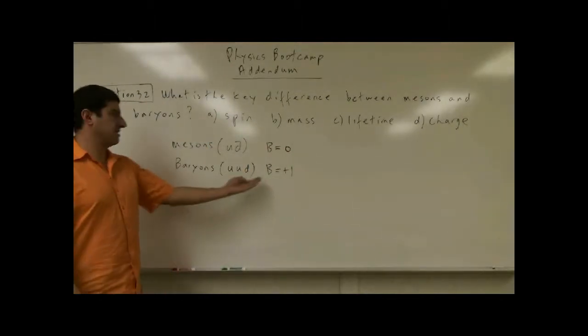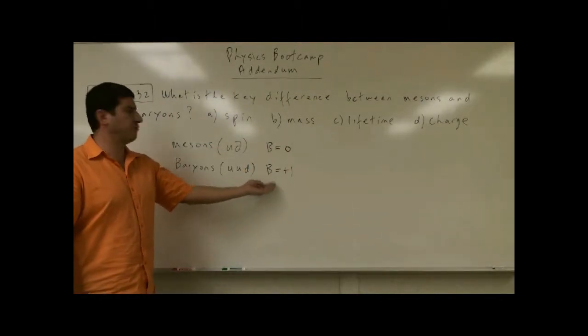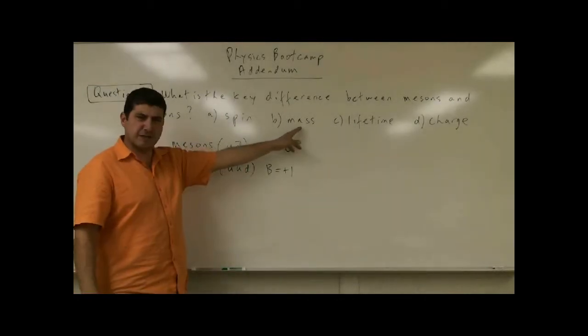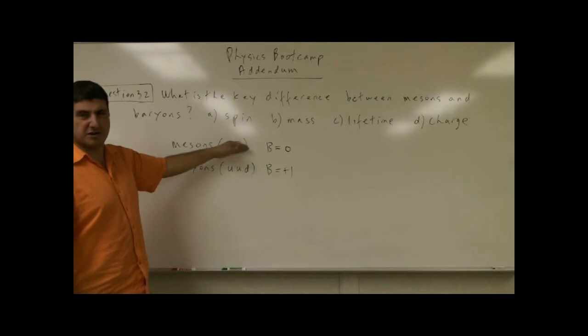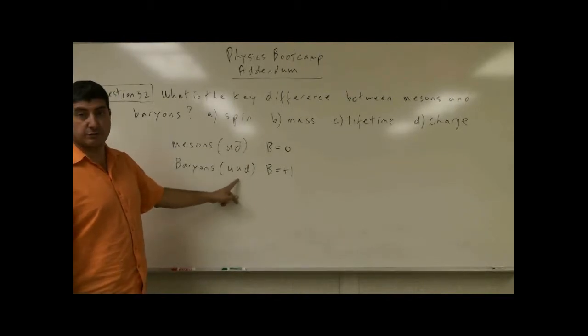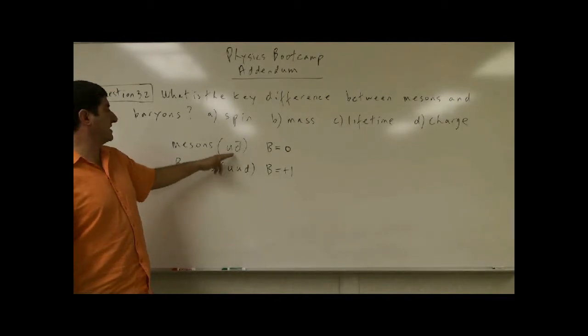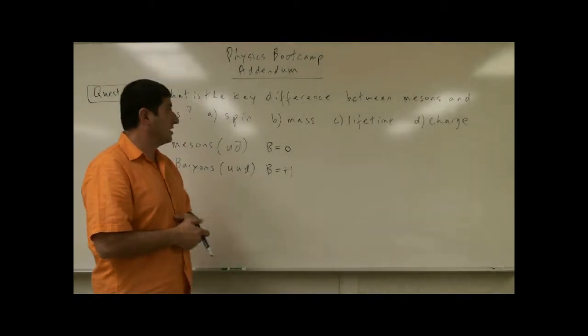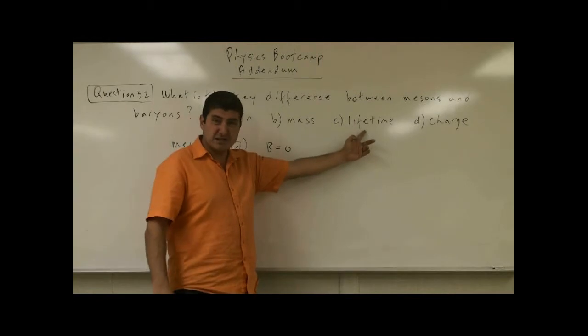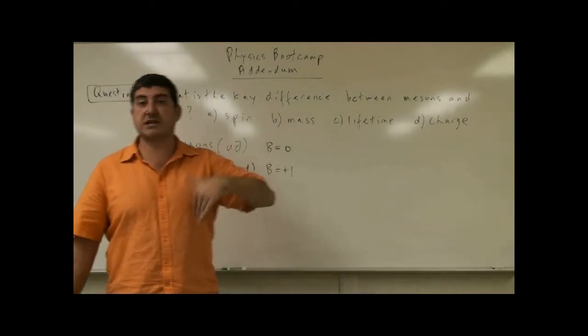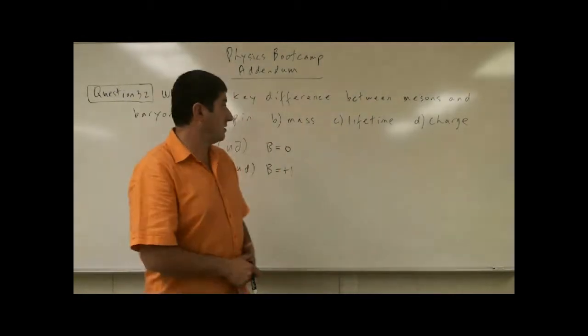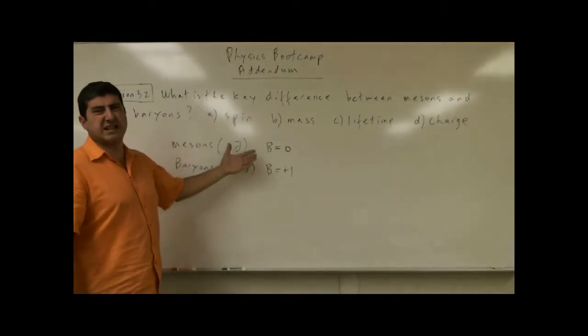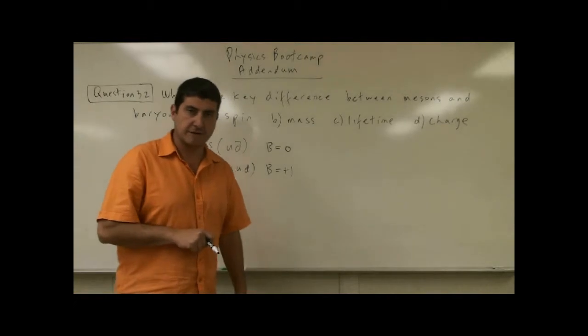Is that the main difference, that this has a baryon number positive one and this has baryon number zero? No. Is it their mass that is the main difference? Not necessarily. It could be that this is heavier, but we could probably find combinations of quarks that would make a meson heavier than a baryon. Is it the lifetime, the charge? Well, it's possible the charges are different, but that's not the main essential difference.